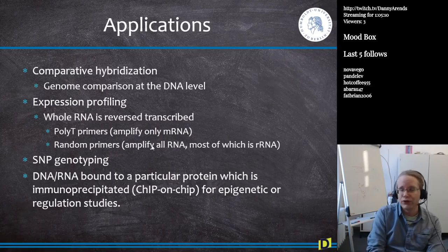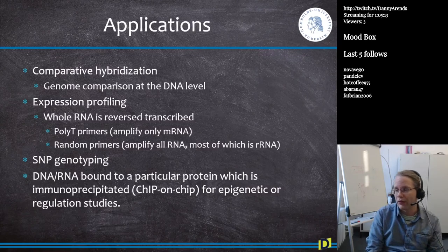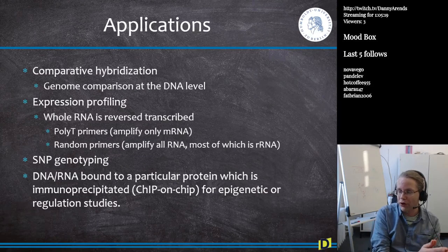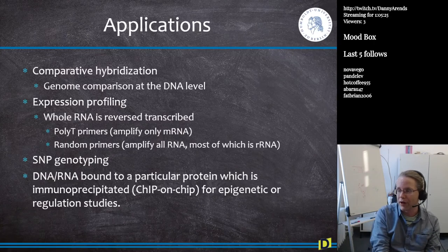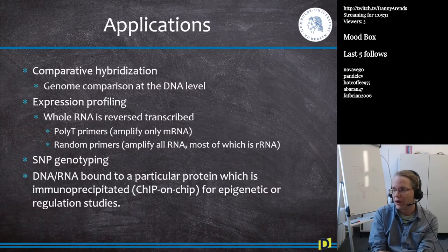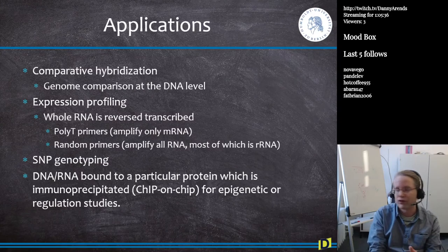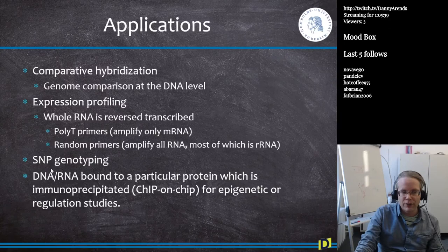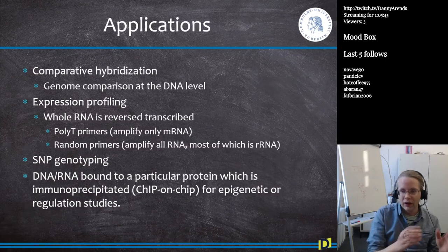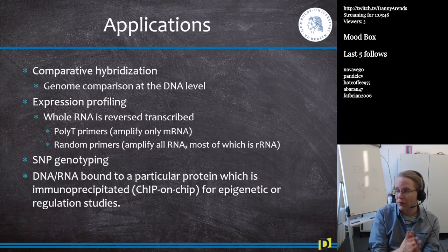Microarrays are also used to genotype SNPs. We have two probes on the array — one targeting the A allele and one targeting the T allele. When we hybridize our sample, if the sample had an A, the T probe will light up, and if the sample had a T, the A probe will light up, because the complementary strand is bound. This is how you can do SNP genotyping. You can use microarrays to genotype individuals and see at every position in the genome whether the animal had an A, T, C, or G.